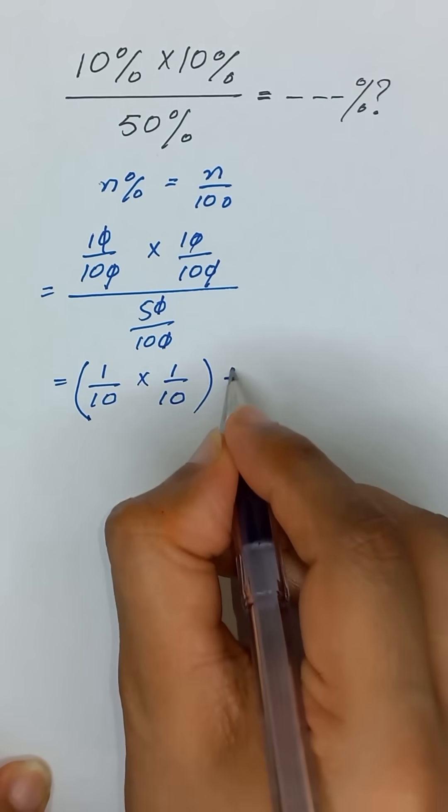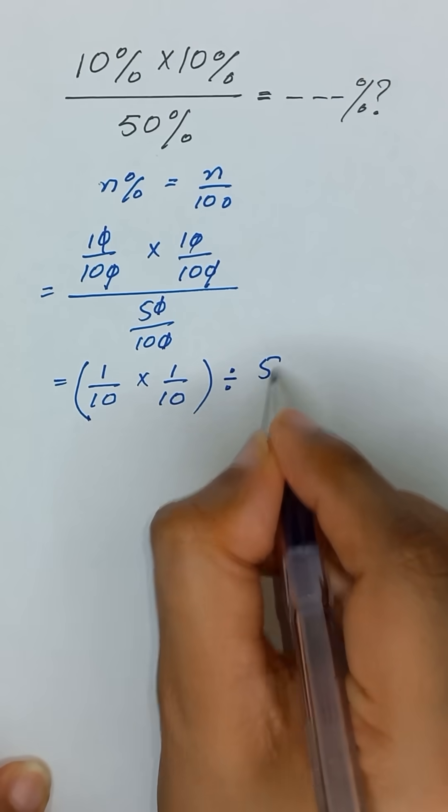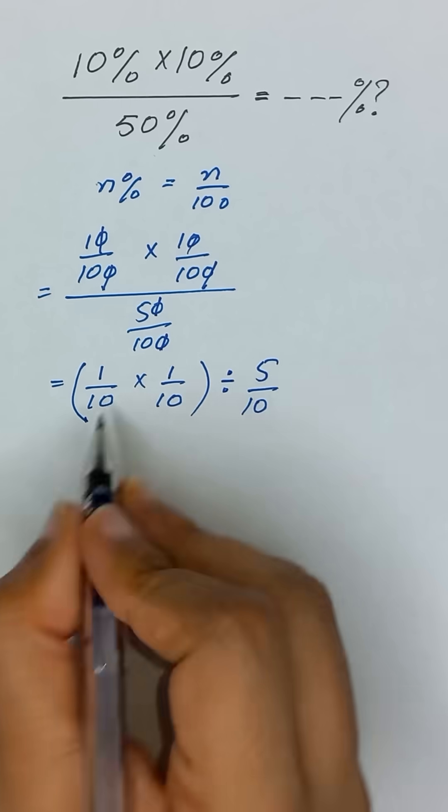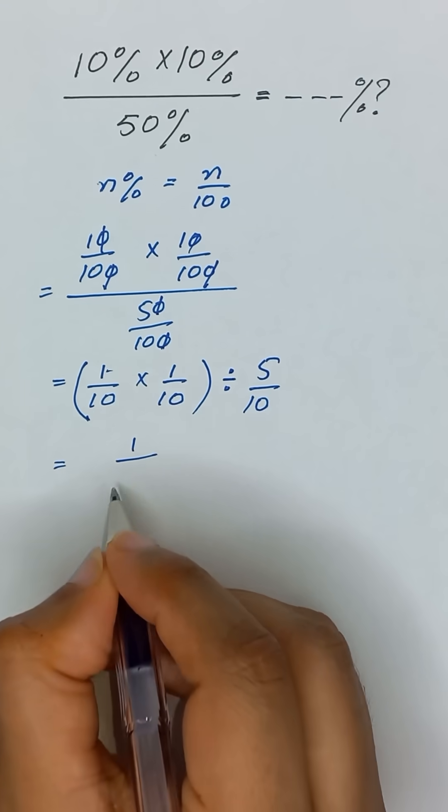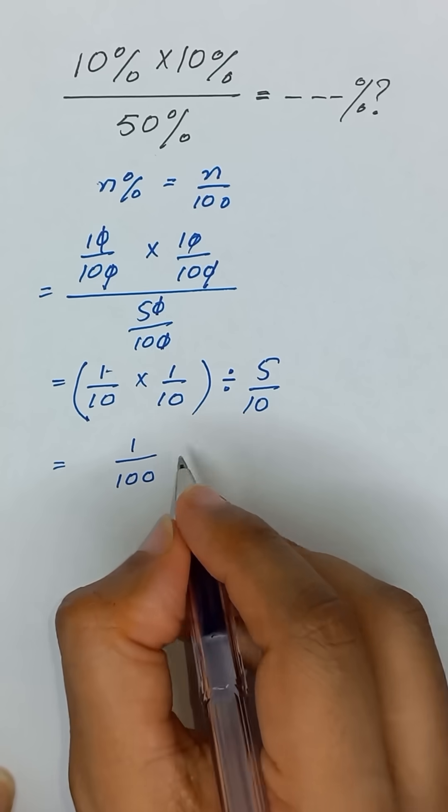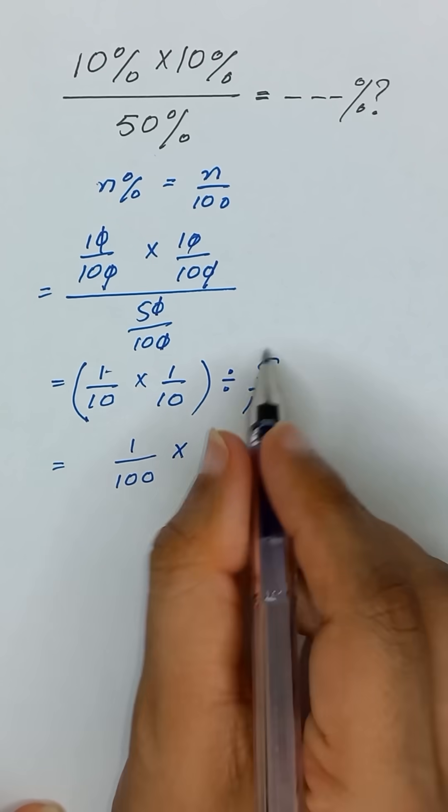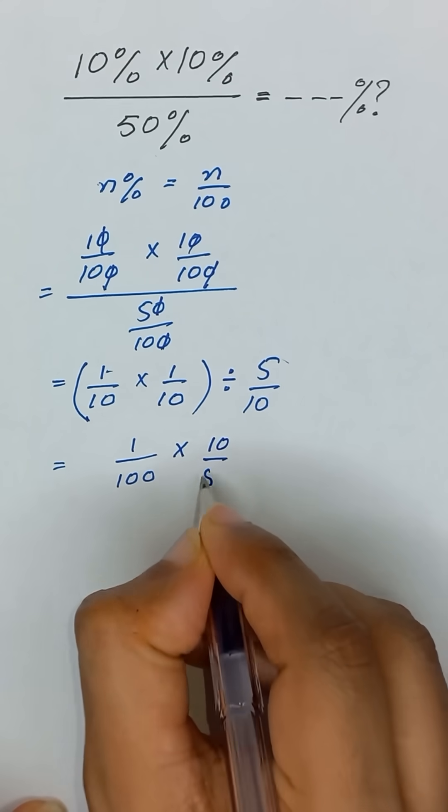Now we will change this divide into multiply. So it will become 5 divided by 10. 1 times 1, 10 times 100. We will change this divide into multiply and the reciprocal of next fraction which is 10 divided by 5.